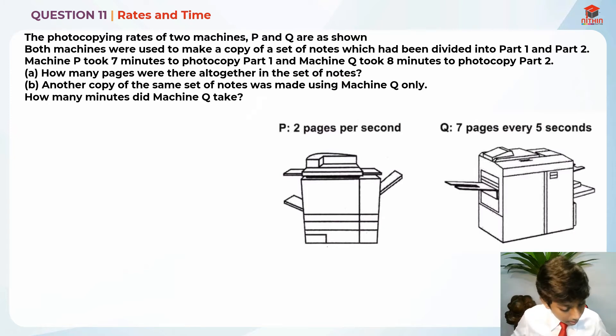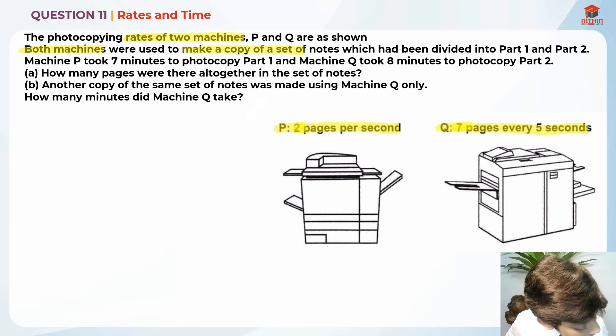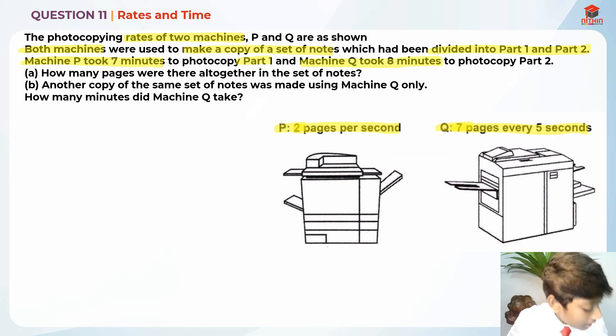Both machines were used to make a copy of a set of notes which had been divided into part 1 and part 2. Machine P took 7 minutes to photocopy part 1 and machine Q took 8 minutes to photocopy part 2. Part A, how many pages were there all together in the set of notes?